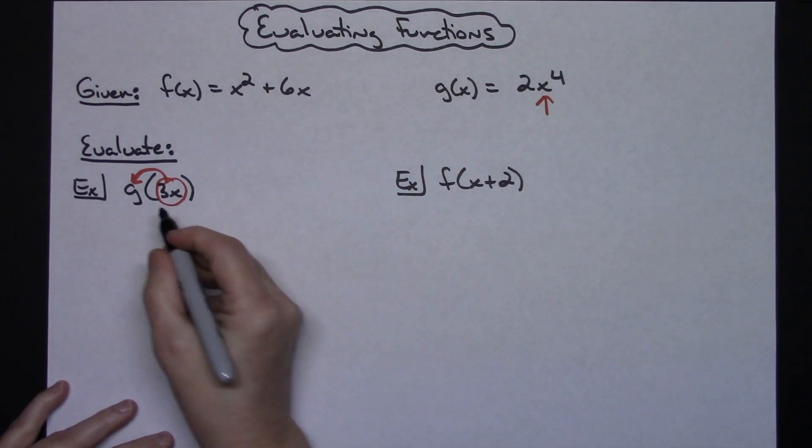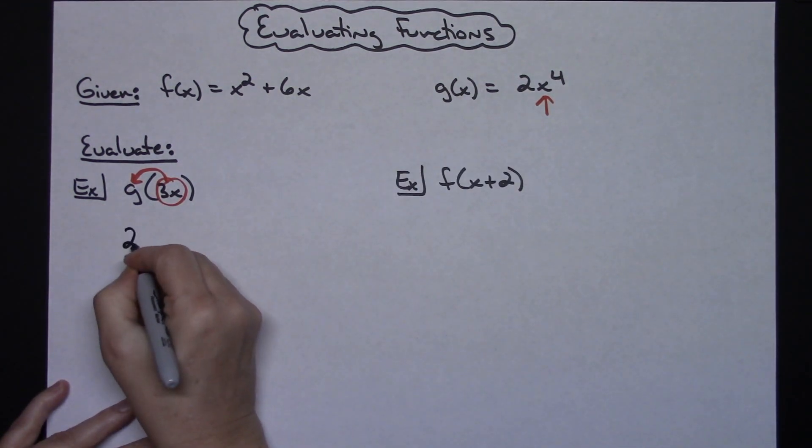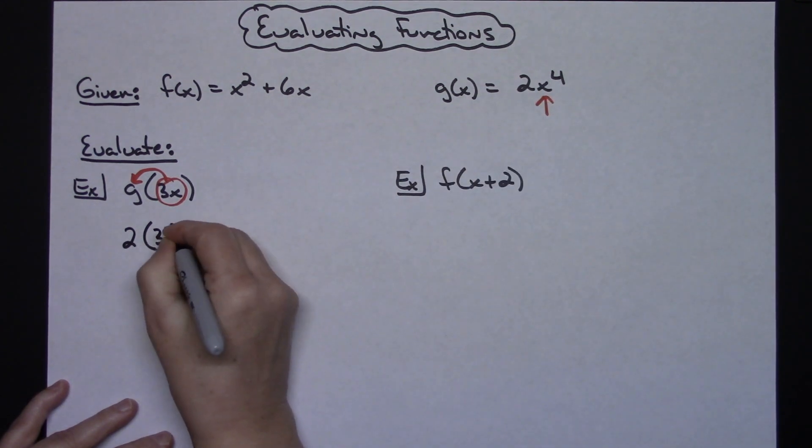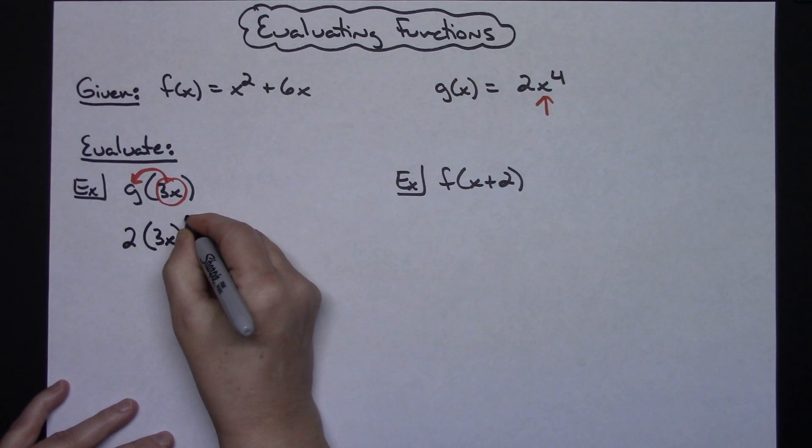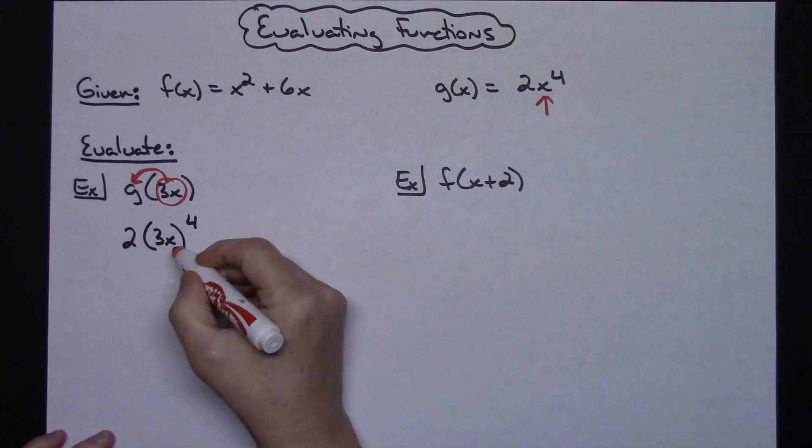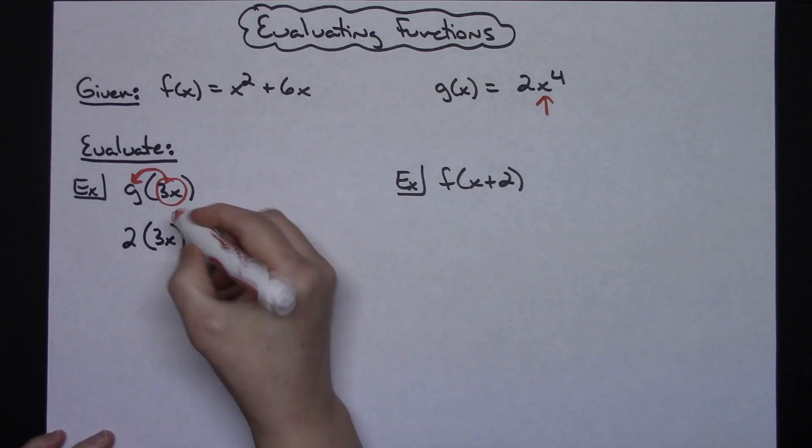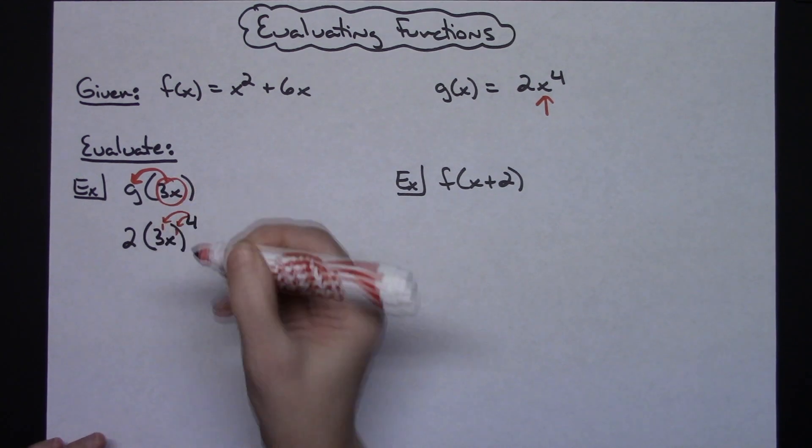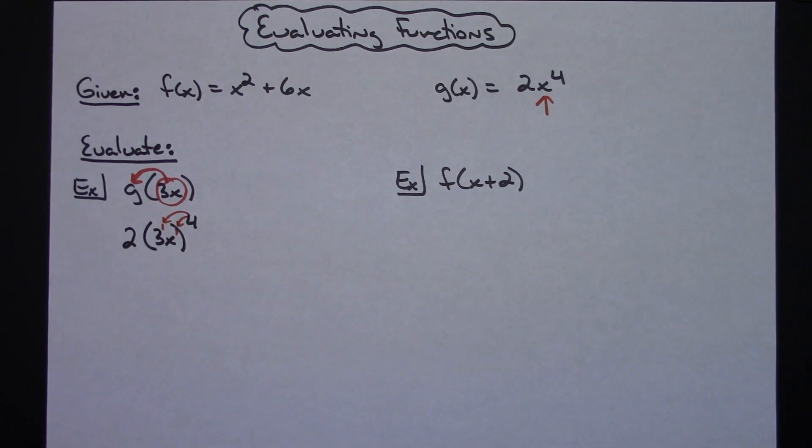If I'm evaluating this, I'll still have the 2 out in front. I'm going to take the 3x and replace it for that x, so I'll have 3x to the fourth power. Now this is like laws of exponents - power raised to a power. I've got 3 to the first power and x to the first power.